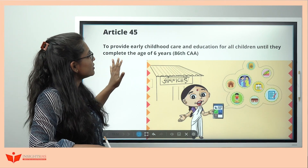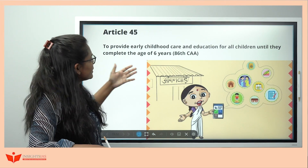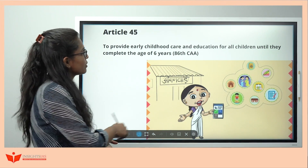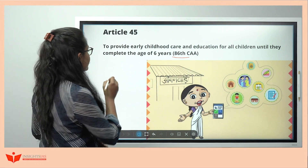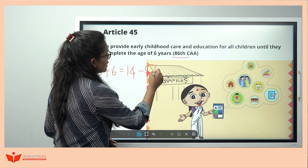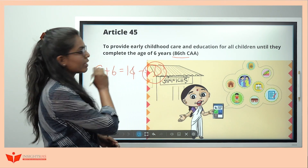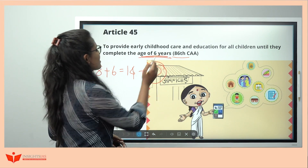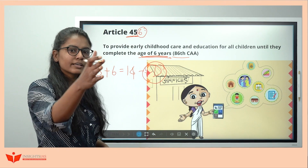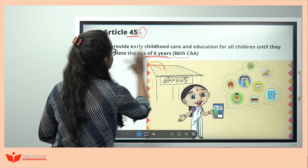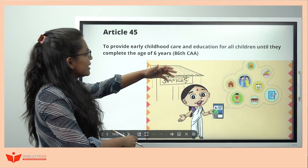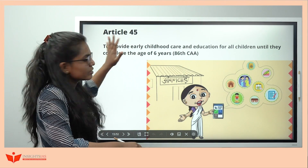Article 45 says to provide early childhood care till the age of six years. It was added by the 86th Constitutional Amendment Act. Remember: 8+6=14. The article number is 45 — four, five, six — so Article 45 says give early childhood care till age six. The 86th CA provides childhood care and education.